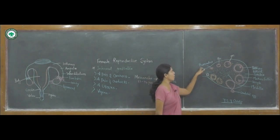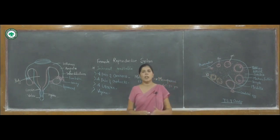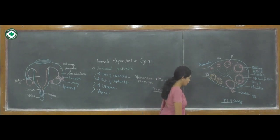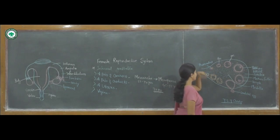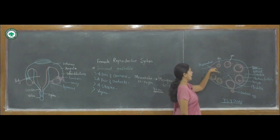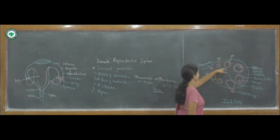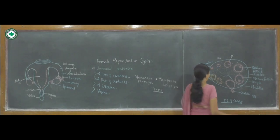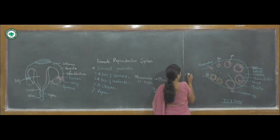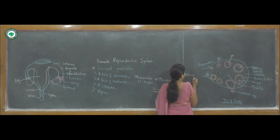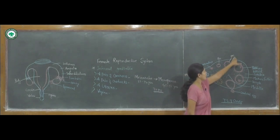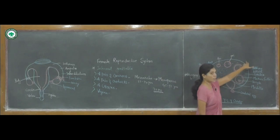Each menstrual cycle involves the process starting from the primordial follicle. The primordial follicle is smaller in size; it is then covered by granulosa cells and turns into the primary follicle. The primary follicle has a thick granulosa layer and turns into the secondary follicle. The secondary follicle secretes estrogen hormone.